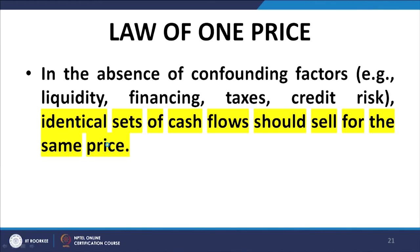Then we moved on to arbitrage and introduced the concept of the law of one price. We said that in the absence of confounding factors like liquidity, financing, taxes, and credit risk, identical sets of cash flows would sell at the same price. I emphasize that we are talking about cash flows, not profitability. Identical sets of cash flows should sell at the same price.